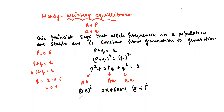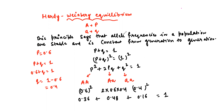So p² = 0.36, 2pq = 0.48, q² = 0.16. If you add all three, you get 1. So the allelic frequencies — the principle says allelic frequencies in the population are stable and do not change from generation to generation.